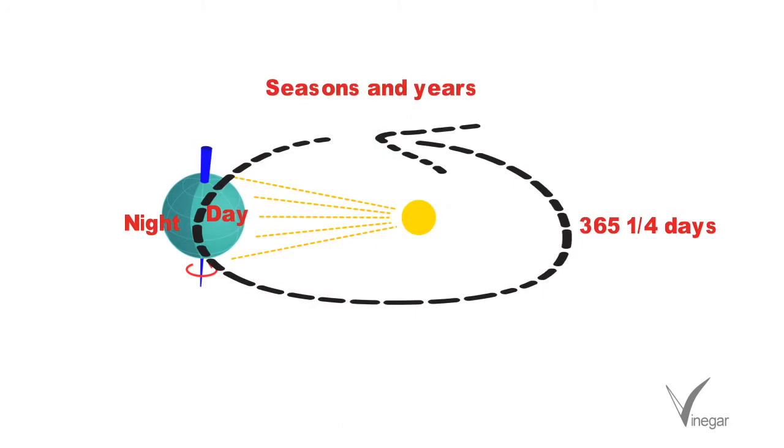Since we cannot add 1/4 of a day to a single year, we add an extra day every 4 years making it a leap year.